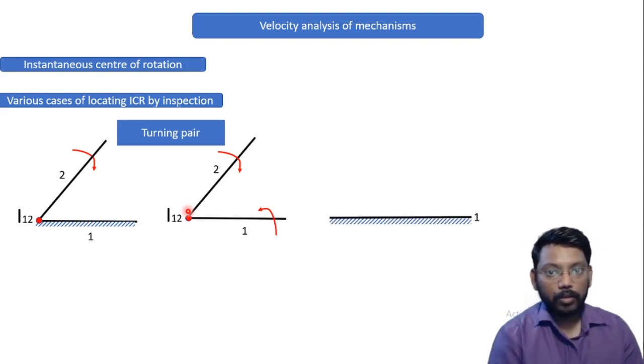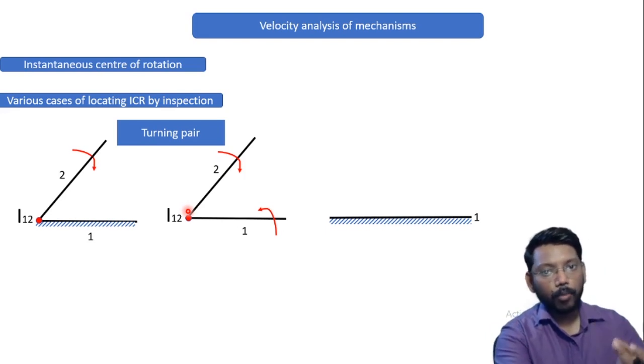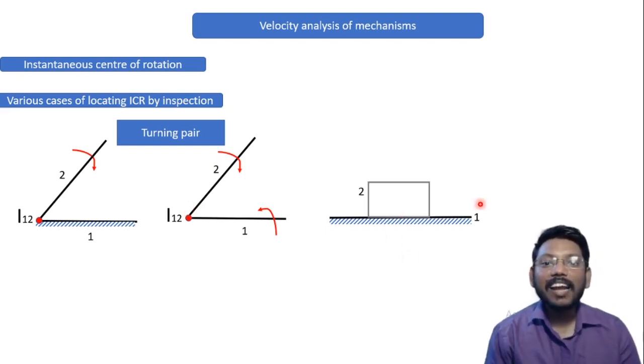Moving on forward, let us talk about sliding pair. Now for that, I have taken a surface which is fixed, which is link number one. Now on this surface, there has to be a box which will be your link number two and this box is going to move in the right direction.